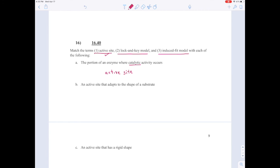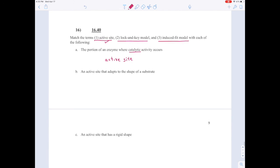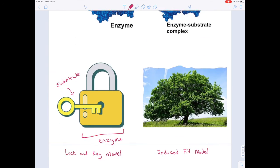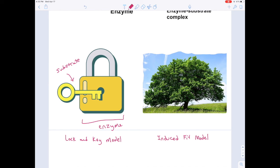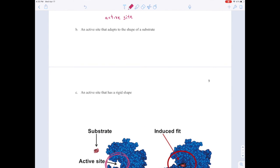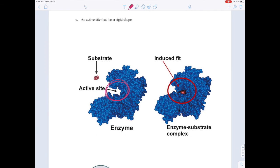B says an active site that adapts to the shape of a substrate. So that was like the tree down here that could adapt in the wind. That's the induced fit model. So the induced fit model says that the active site can adapt to the shape of the substrate. And you can see that happening here, how this blue blob sort of clenched its jaws around that substrate.